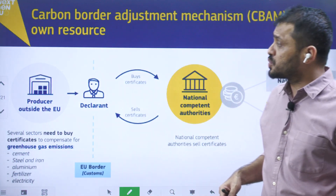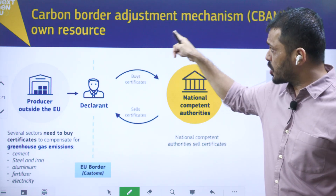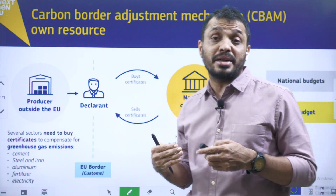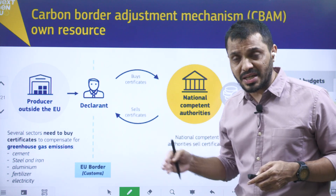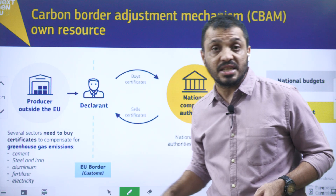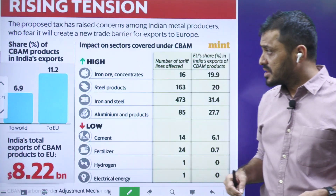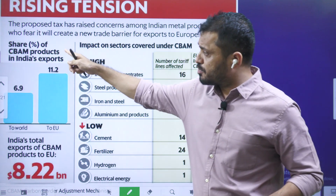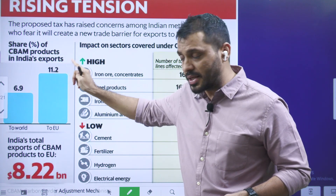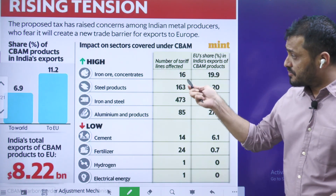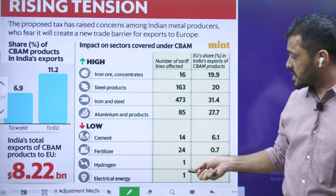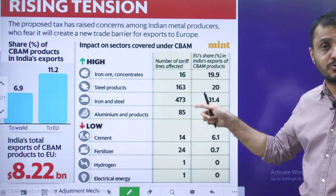Regarding Carbon Border Adjustment Mechanism: before any imports come into the European Union, they must declare how much carbon was utilized and how much carbon emissions were emitted in the production of those goods. Based on that, they have to buy certificates. This especially affects sectors such as cement, steel, aluminum, fertilizer, and electricity, as these are carbon-intensive industries. Around 11.2% of products exported to the EU will be affected under this new regime, with iron ore at 19.9% and steel products and aluminum products particularly impacted.